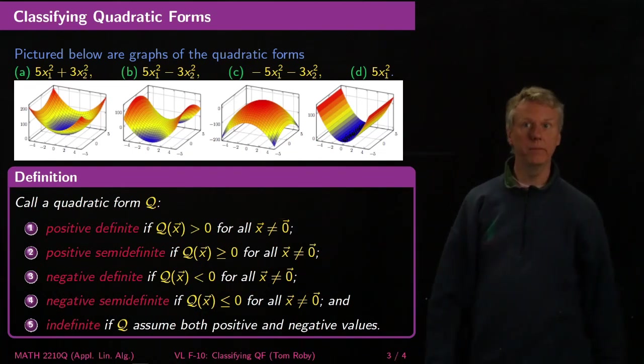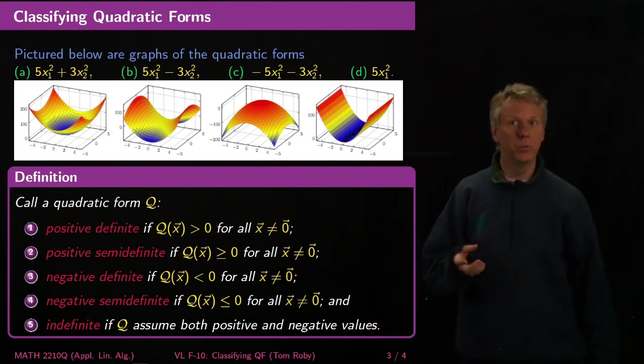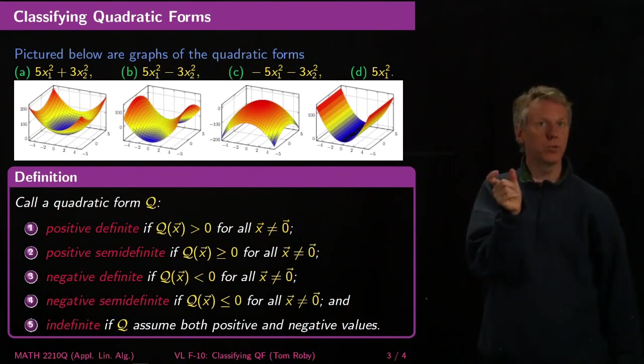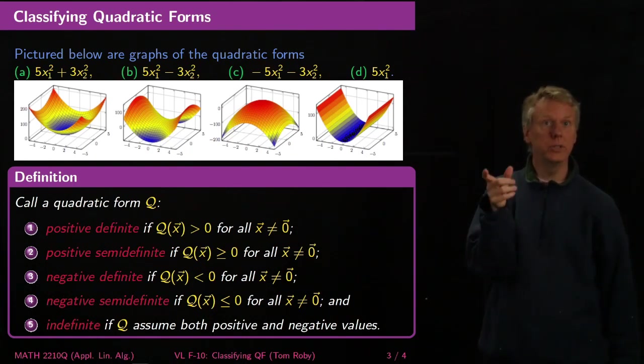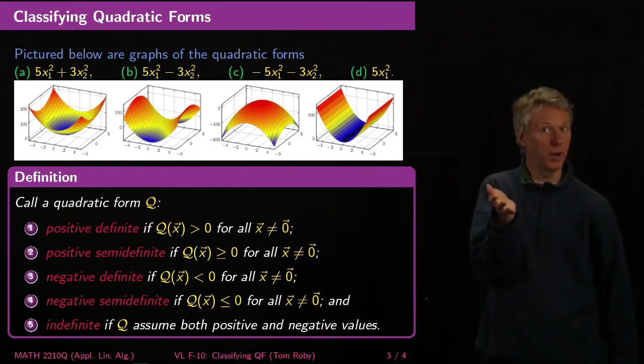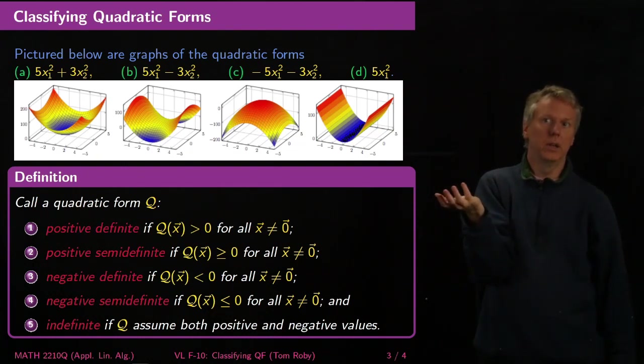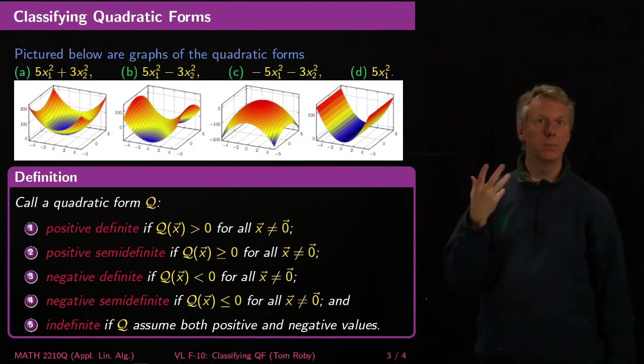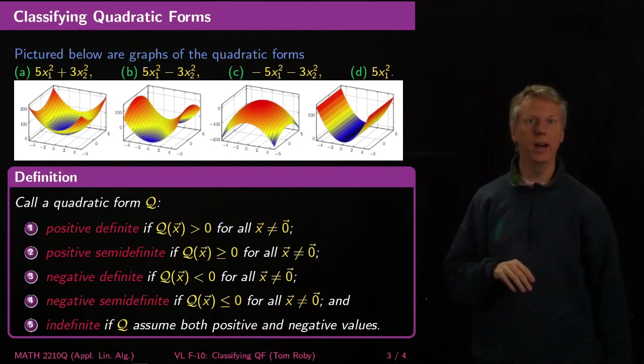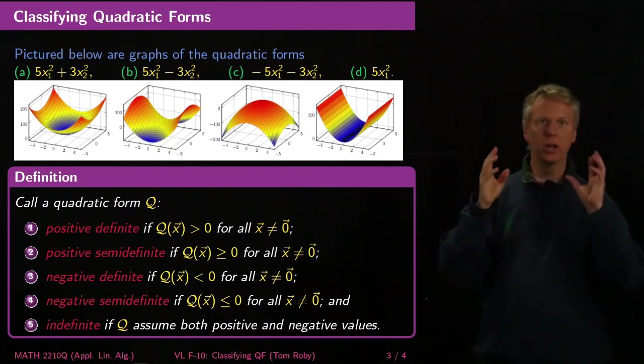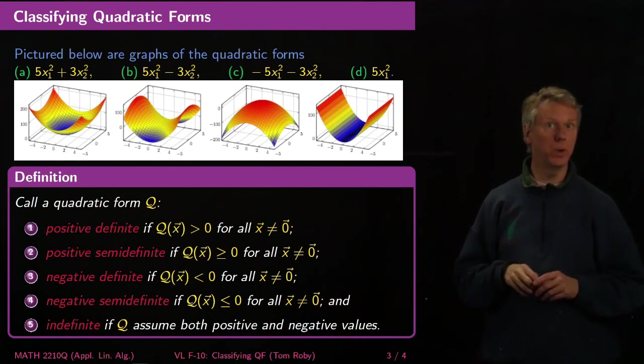You may recall that we actually use positive definite to describe the standard inner product, which is the case when the symmetric matrix is just the identity matrix. That's a useful property of these forms or inner products to have if you want to talk about more general forms later on.